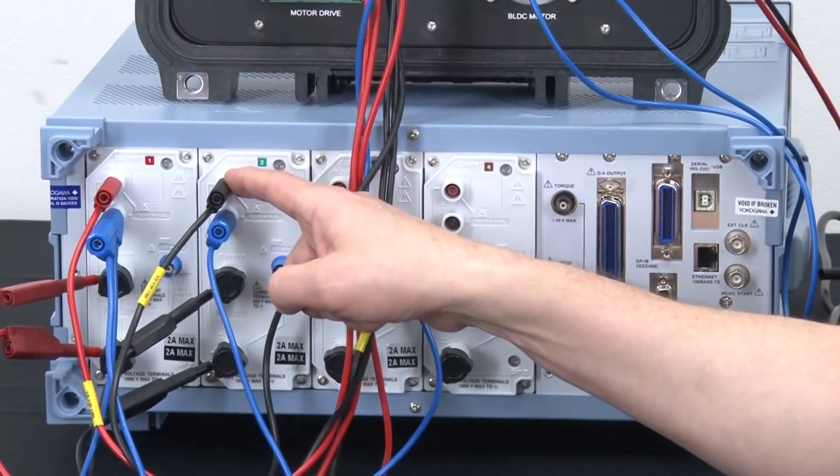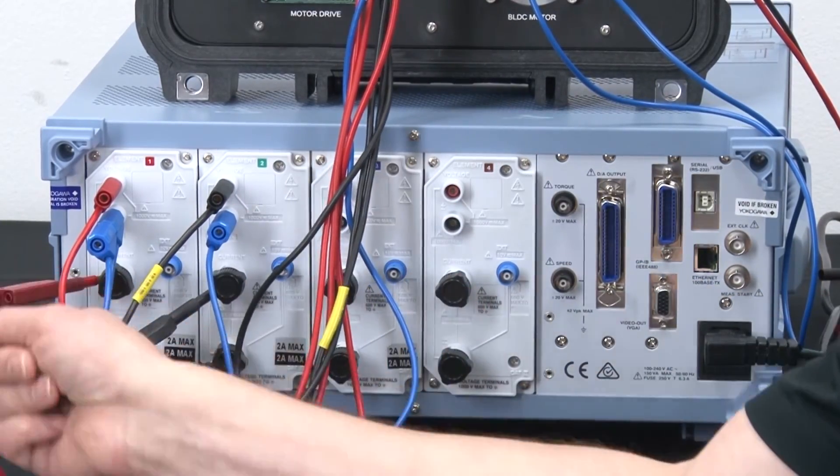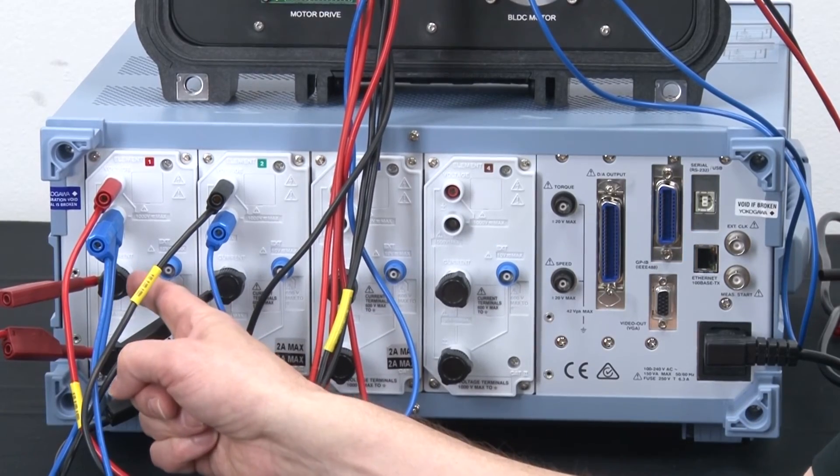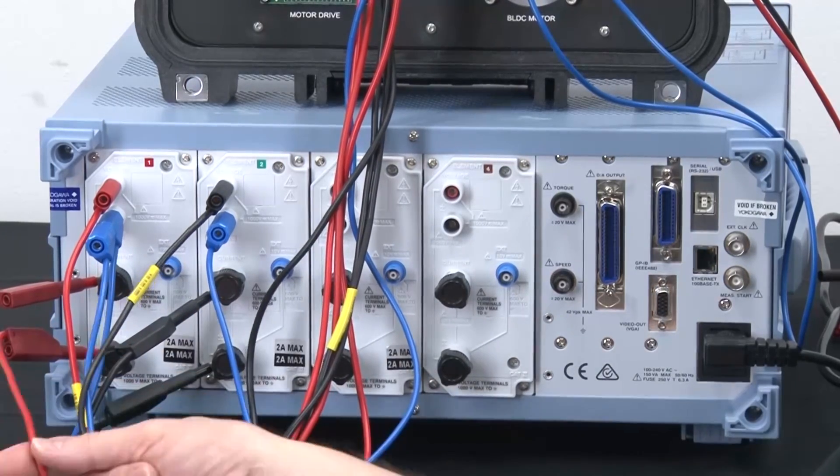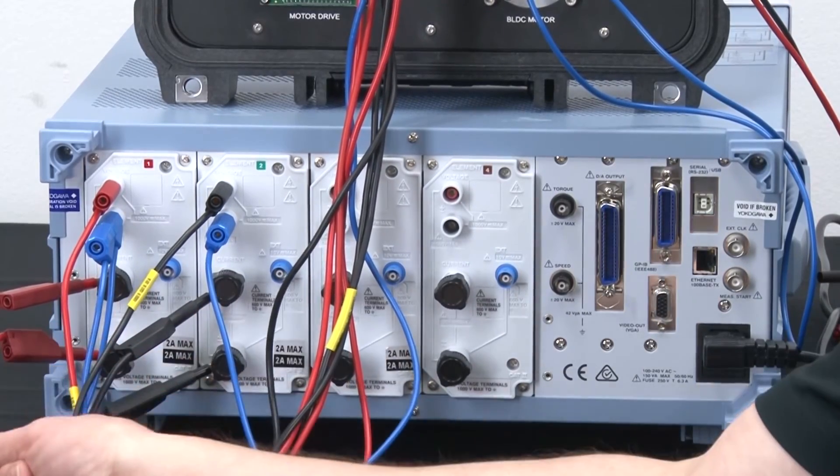Next, on the current inputs, I simply take phase R from the drive and pass it through the top of the internal shunt or the current input on the power analyzer and pass it out the bottom. And then that goes back to the motor. So that's phase R. It's red.